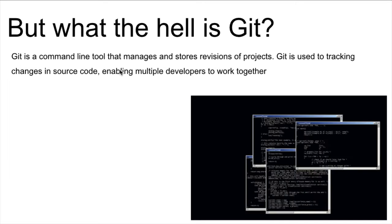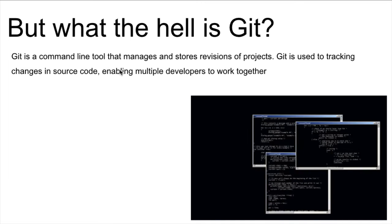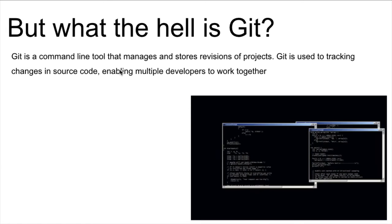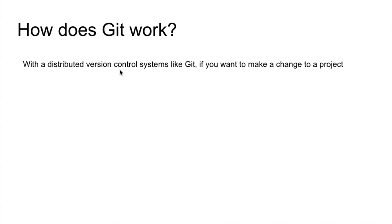Before I go further — you just told me that Git is something I do in my terminal, but how does it work? Here's how Git works. Git is what they call a distributed version control. If you wanted to make a change to a project you're working on, you would have to make a copy of the whole repository — a.k.a. folder — to your own system.